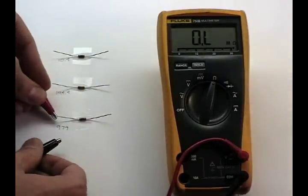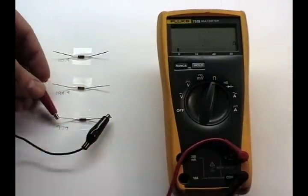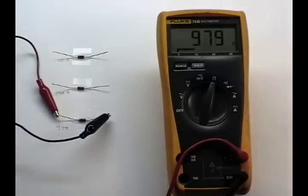The nominal 1,000 ohm resistor measures 979.